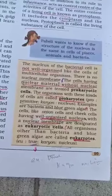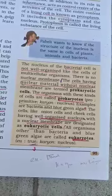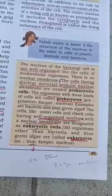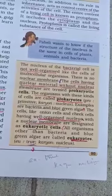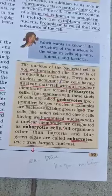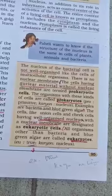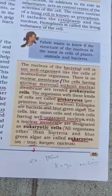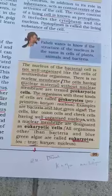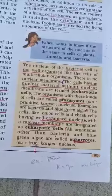Cells such as onion cells and cheek cells have a well-organized nucleus with a nuclear membrane — these are called eukaryotic cells. All organisms other than bacteria and blue-green algae are called eukaryotes.